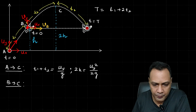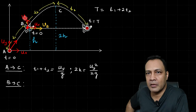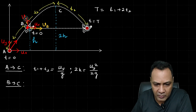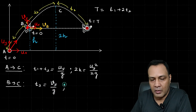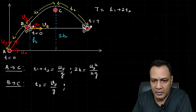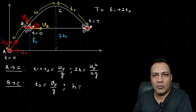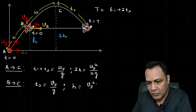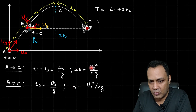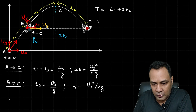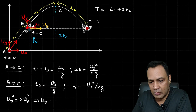For the motion from B to C, the time taken is t2, and vy is the initial vertical velocity at B, so t2 = vy divided by g. The height risen from B to C is h (since total max height is 2h and B is at height h), giving h = vy² divided by 2g. Comparing this with 2h = uy² divided by 2g, we get uy² = 2vy², so uy = √2 · vy.